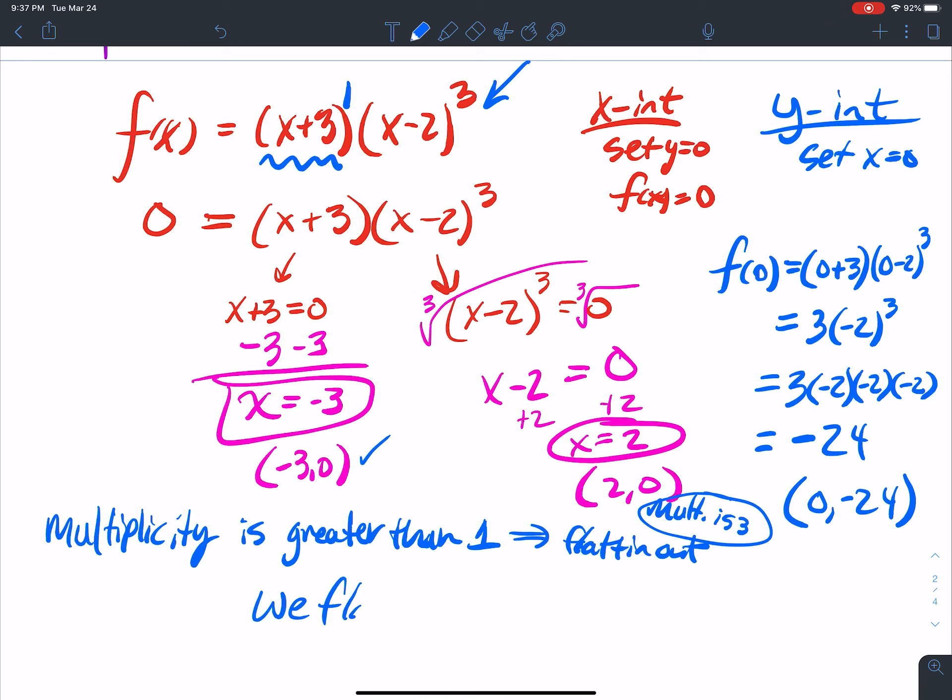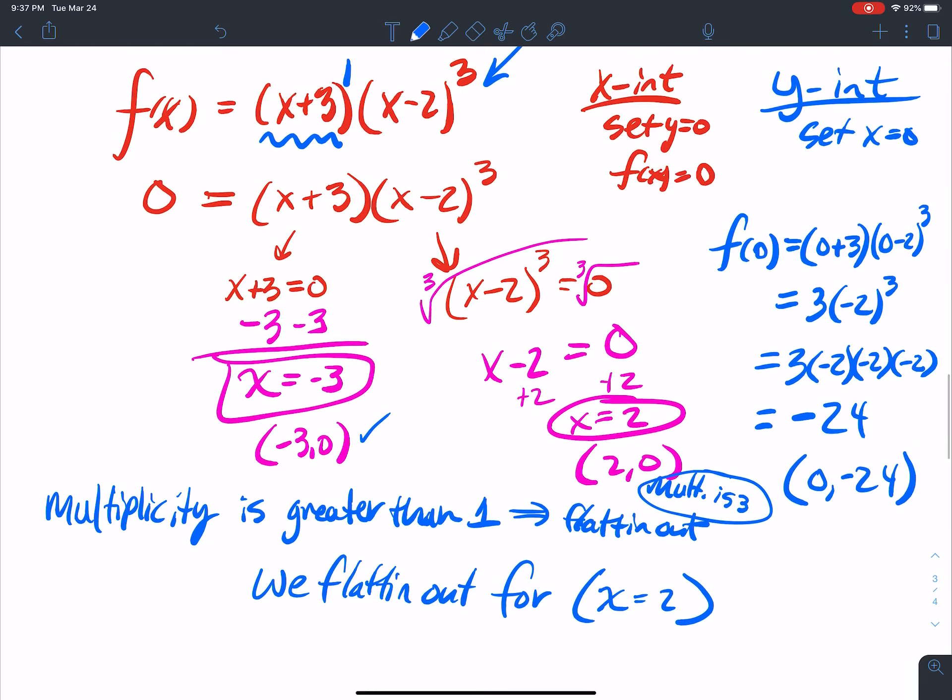So the multiplicity is 3 here. So that means we flatten out for x equal to 2. Okay? Flatten out for x equal to 2. 0. All right? Flatten out for x equal to negative 3. That's what this shows me right here.